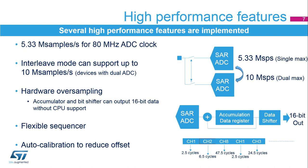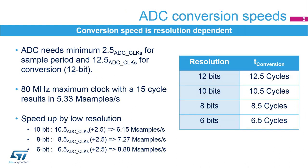The ADC offers an auto-calibration mechanism. It is recommended to run the calibration on the application if the reference voltage changes more than 10 percent, such as when emerging from reset or from a low power state where the analog voltage supply has been removed and reinstated. The ADC needs a minimum of 2.5 clock cycles for sampling and 12.5 clock cycles for conversion. With an 80 megahertz ADC clock, it can achieve 5.33 megasamples per second.